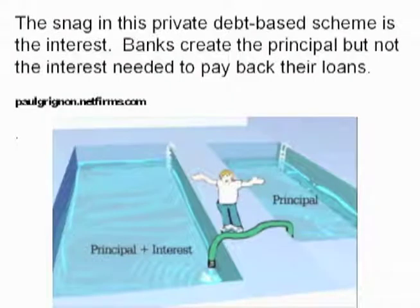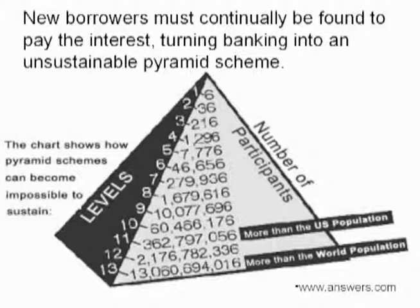The problem with that whole system is the interest. The banks would always lend this money at interest, but they created the principal — not the interest. So where do you get the interest? Either someone has to take out another loan, or somebody has to default. It's like a big game of musical chairs, and if there aren't enough chairs, somebody has to default. Right now we have both things going on: debt expanding exponentially and people going into default. What it creates is this pyramid scheme — an unsustainable exponential growth. It's like a parasite on the side of the economy, extracting money out, so the capital account that this interest is going into is always expanding.